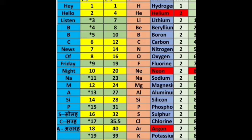'Hey' represents hydrogen, 'Hello' is helium, 'Listen' is lithium, 'Be' is beryllium, 'B' is boron, 'C' is carbon, 'N' is nitrogen, 'News' stands for neon — wait: 'Of' is oxygen, 'Friday' is fluorine, 'Night' is neon. So that covers the first 10 elements.